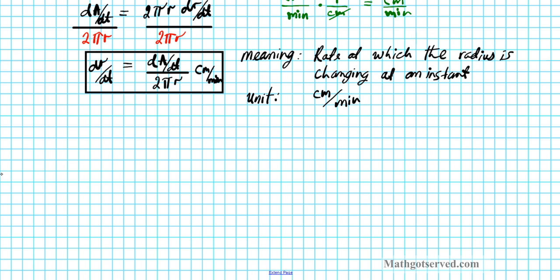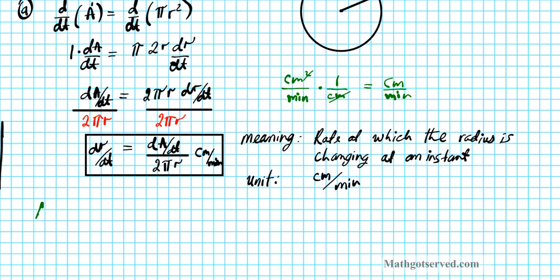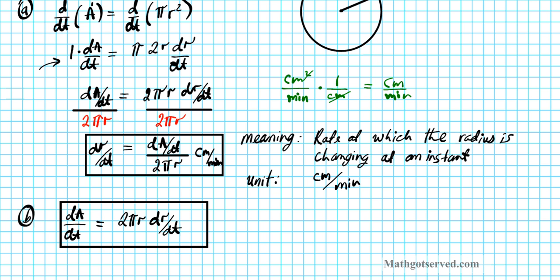The second part, we have to find dA/dt and state the unit. Well, that's easy because we already figured it out while we were looking for dr/dt. This is dA/dt right here. So dA/dt is equal to 2 pi r dr/dt. Now what is the meaning first?